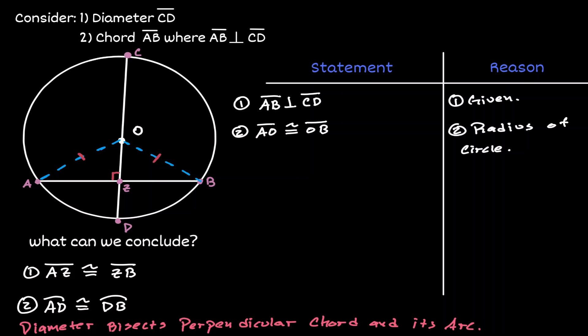Now notice that we have two triangles: Triangle AOZ and triangle OZB. Both triangles share line segment OZ. So we can say that OZ is congruent to itself by the reflexive property.